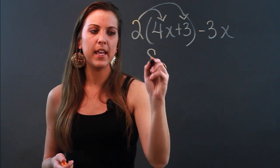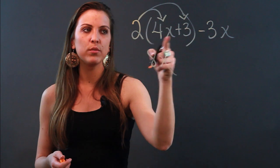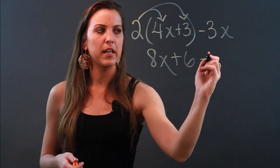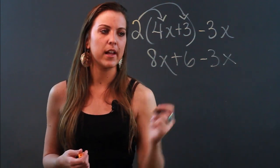So 2 times 4x is 8x. 2 times positive 3 is positive 6. And now I'm just bringing down anything that I didn't use, which is my minus 3x.